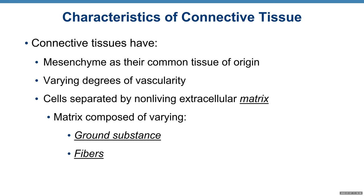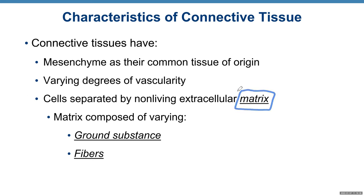Characteristics of connective tissue: connective tissue has mesenchyme as its common tissue origin, and varying degrees of vascularity. Most connective tissue is highly vascular; cartilage is avascular, and dense connective tissue proper is slightly vascular. Cells are separated by a non-living extracellular matrix — cells of the connective tissue do not have cellular junctions, so there is a large amount of extracellular material between cells.